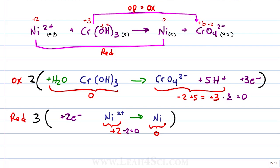Let's distribute the numbers so we don't get confused. 2 times the invisible 1 is 2H2O and 2 chromium hydroxide to give us 2 chromates plus 2 times 5 is 10H+ and 3 times 2 is 6 electrons. For reduction, we multiply everything by 3.